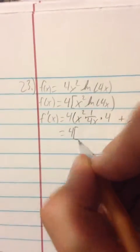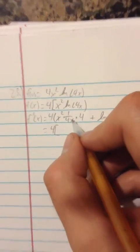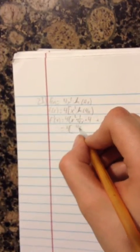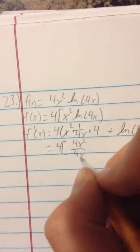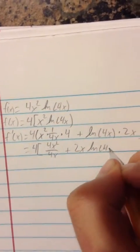Alright, so then we get 4 times x squared times 4 times 1 over 4x equals 4x squared over 4x plus 2x natural log of 4x.